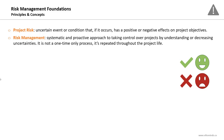What is risk management? It can be defined as a systematic and proactive approach to taking control over projects by understanding or decreasing uncertainties. It's not a one-time only process — it's repeated throughout the project life. It's systematic and, most importantly, it's a proactive approach. We want to take control over the project; we don't want to be controlled by the project and the uncertainties.